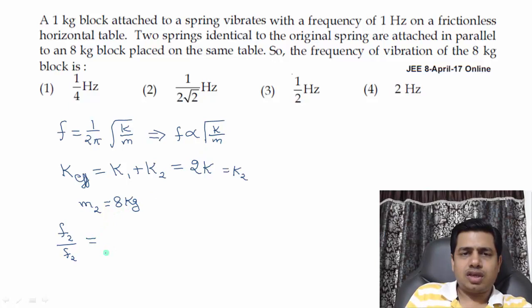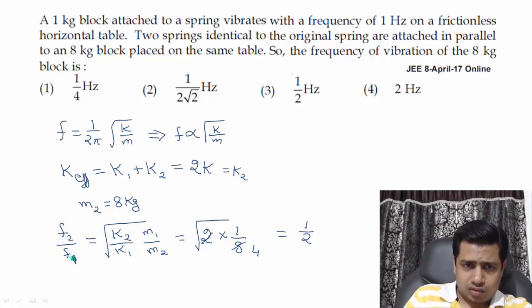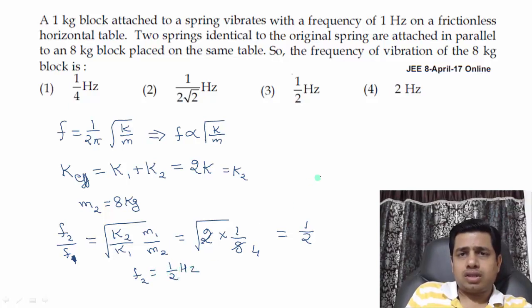So f2/f1 will be √(k2/k1 × m1/m2). k is directly proportional, mass is inversely proportional, so m2 comes below, m1 comes above. k2/k1 is 2 because k2 is 2k and k1 is k. So here 2. m1 is 1, m2 is 8. So 2/8, which is 1/4, and root of 1/4 is 1/2. So f2/f1 is 1/2. f1 is 1 hertz given. So f2 will be 1/2 hertz. The answer is the third option.